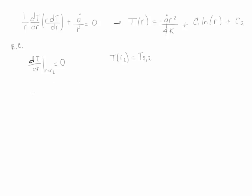To solve for constants C1 and C2, we apply the boundary conditions. We take the derivative of T with respect to R, giving us dT/dr equal to C1 over R minus Q-dot R divided by 2K. Setting this equal to zero to satisfy the insulated boundary condition, we solve for C1 and obtain C1 equal to Q-dot R2-squared over 2K.